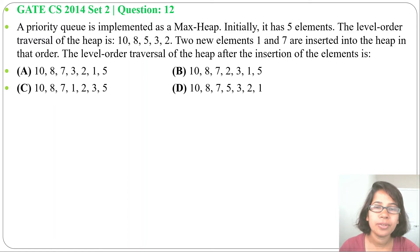Hi, let's have one previous question on heaps. This question was asked in GATE CS 2014 Set 2, Question Number 12. A priority queue is implemented as a max-heap. Initially, it has five elements. The level-order traversal